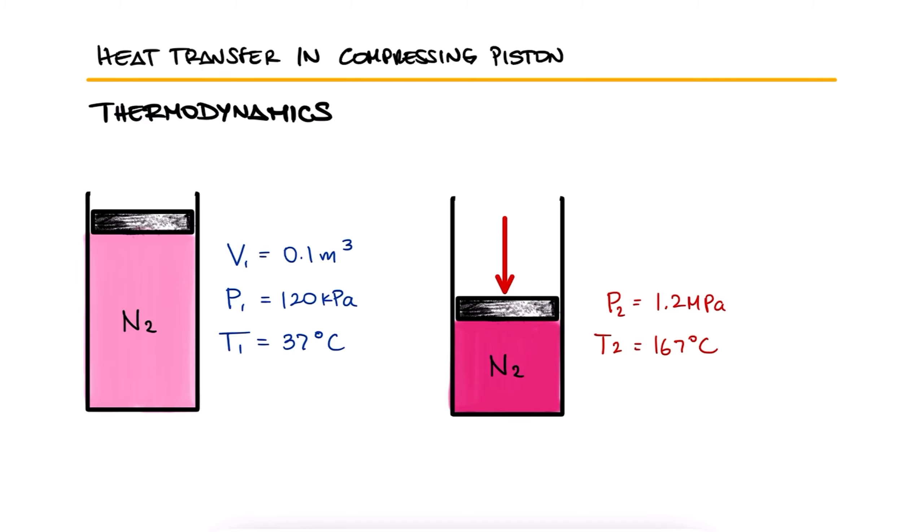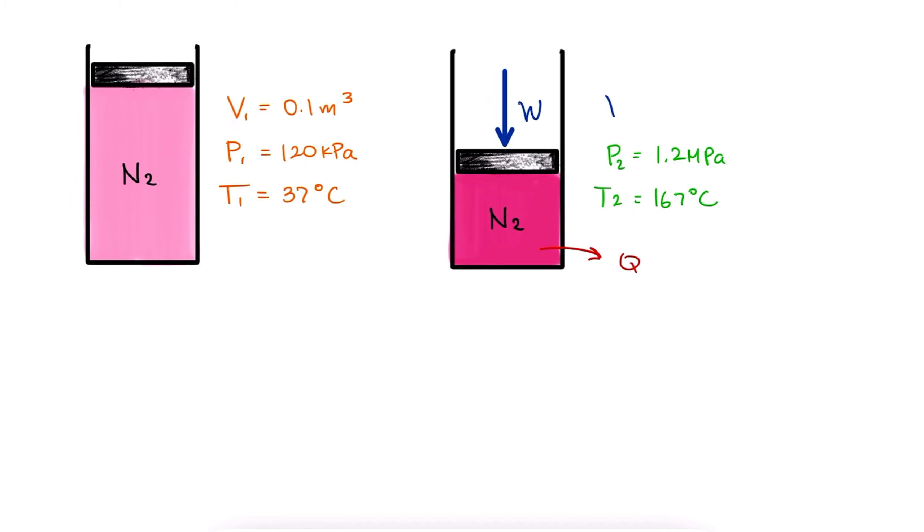During the compression, heat is transferred from the nitrogen and the work done on the system is 15 kilojoules. Determine the amount of heat transfer.